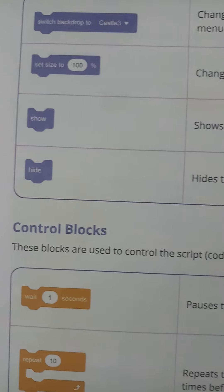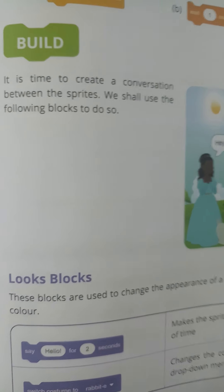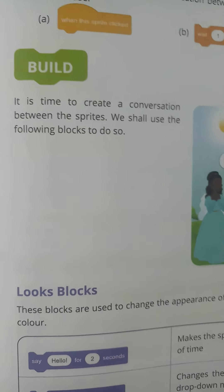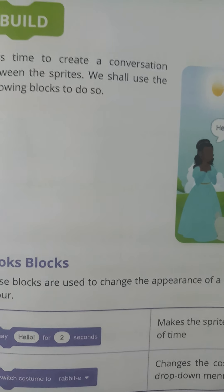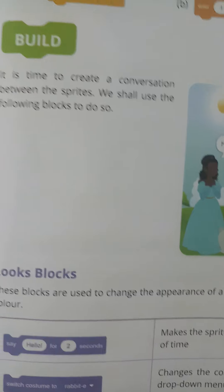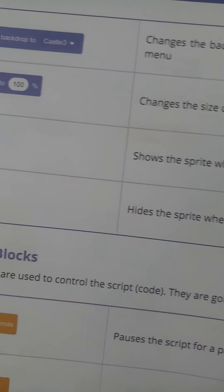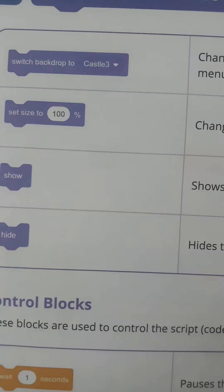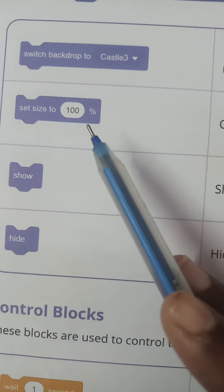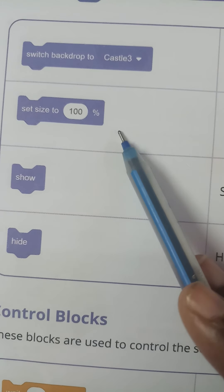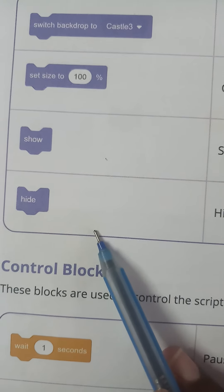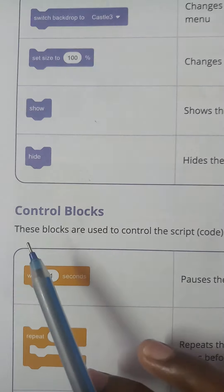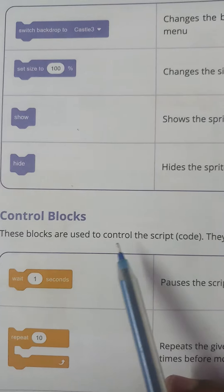To summarize looks blocks: the first is used to make the sprite say something for a specified time; the second changes the costume of a sprite; the third changes the background; the fourth changes the size of the sprite; and the last two are used to show or hide the sprite.